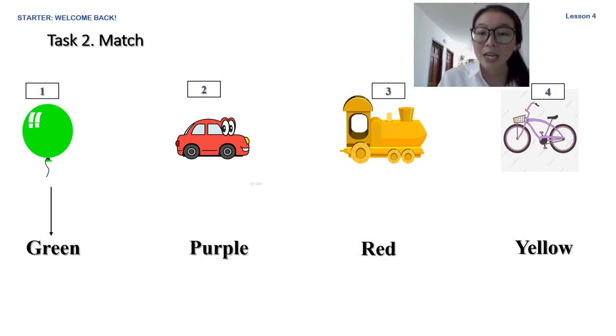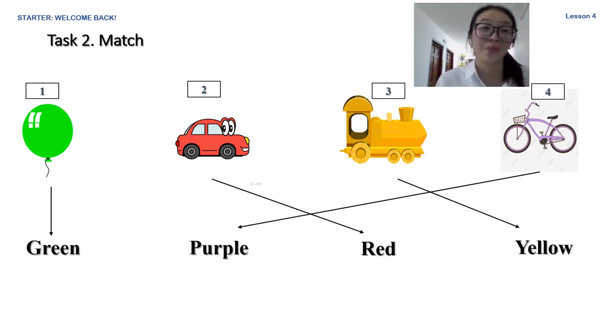Okay, now number 2, the red car. Here's the answer. Number 3, what color is the train? What color? Is it yellow? Exactly, it's yellow. And number 4, the bike. Yes, that's a cute bike. Purple. It's purple. Are you correct? Yes, now let's move to the next part.